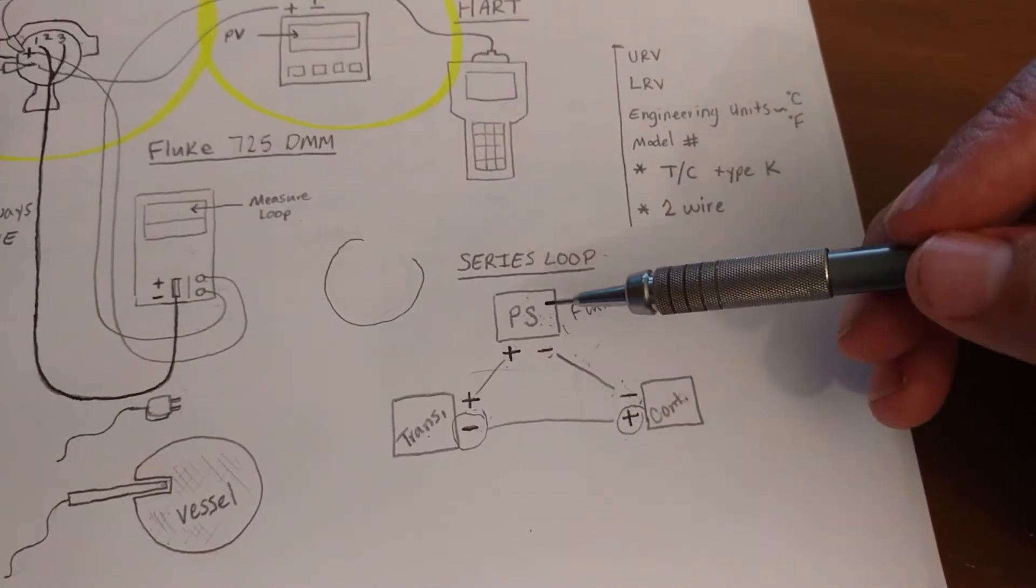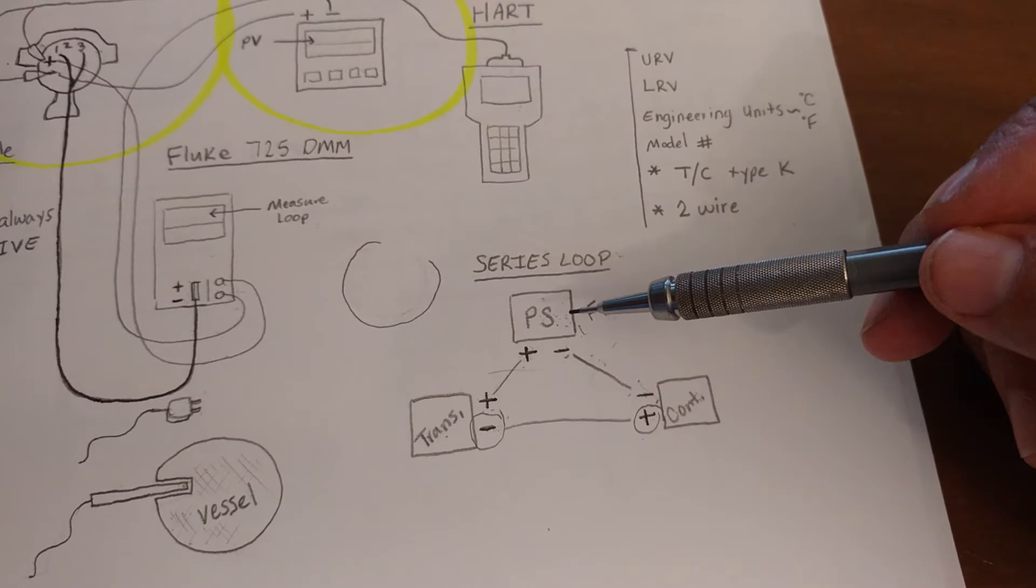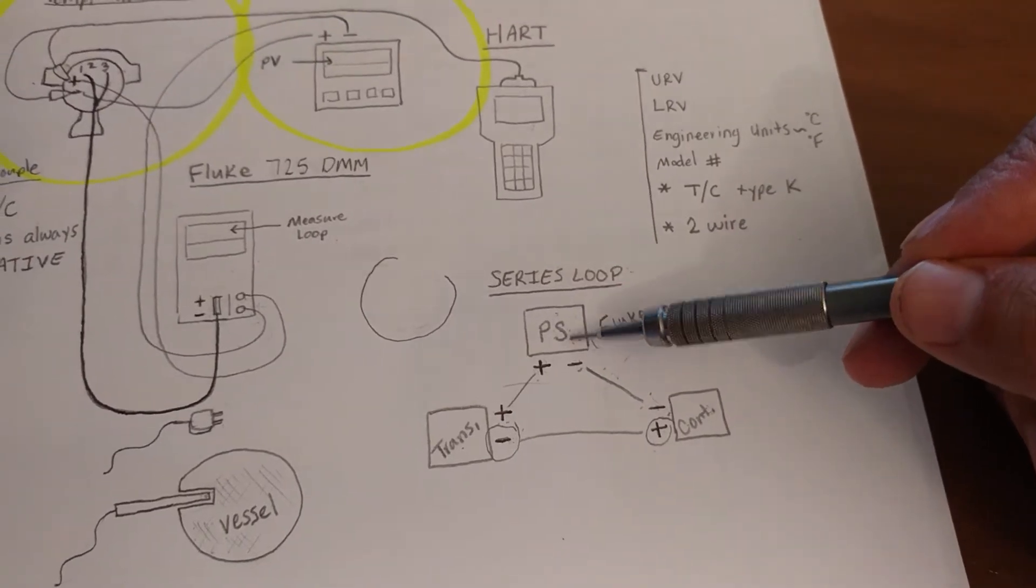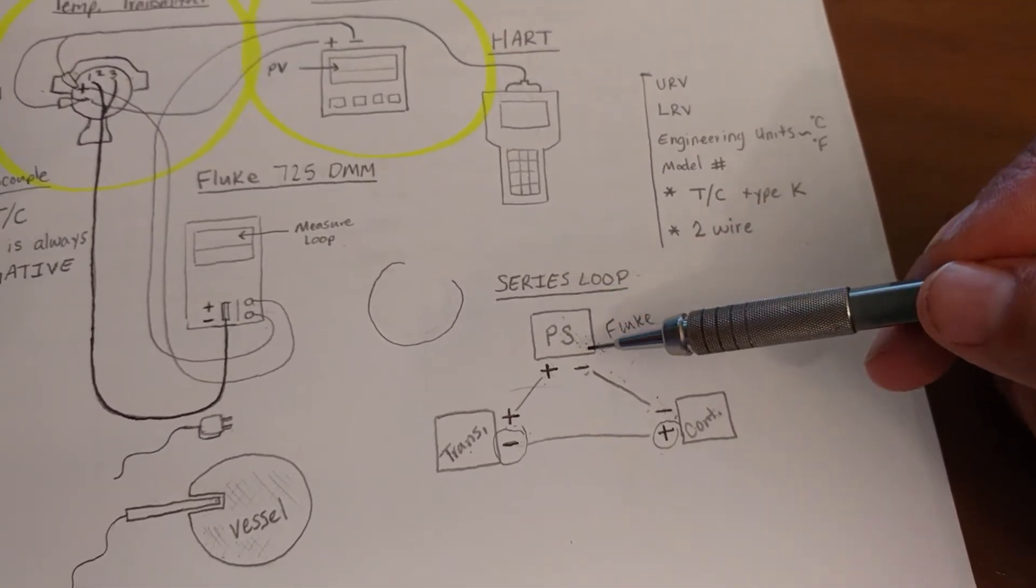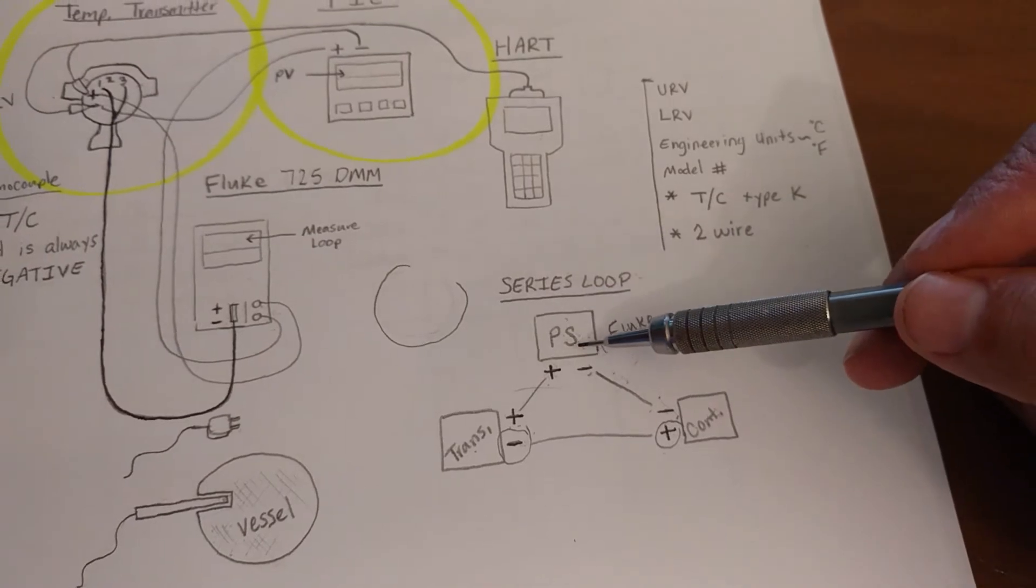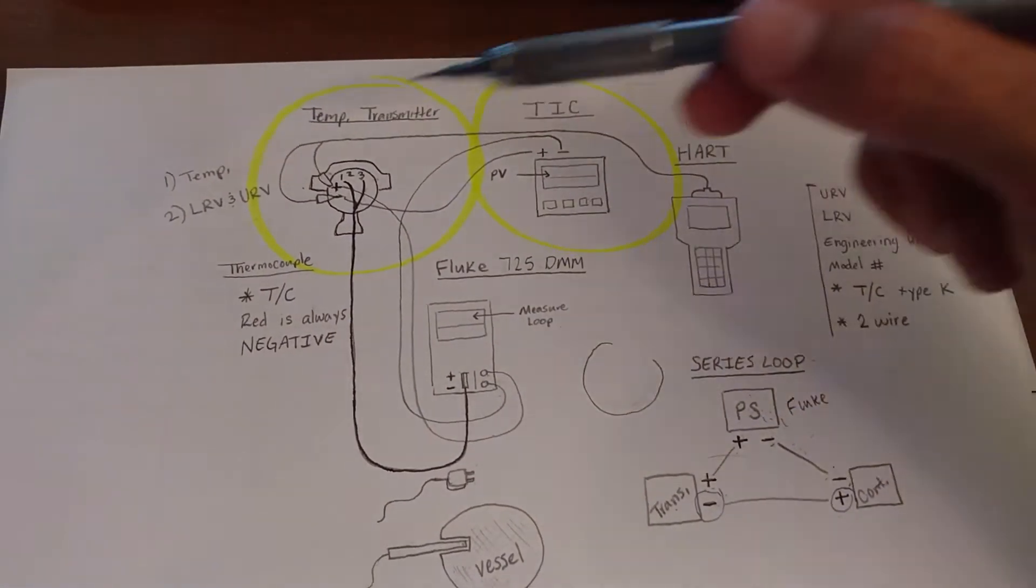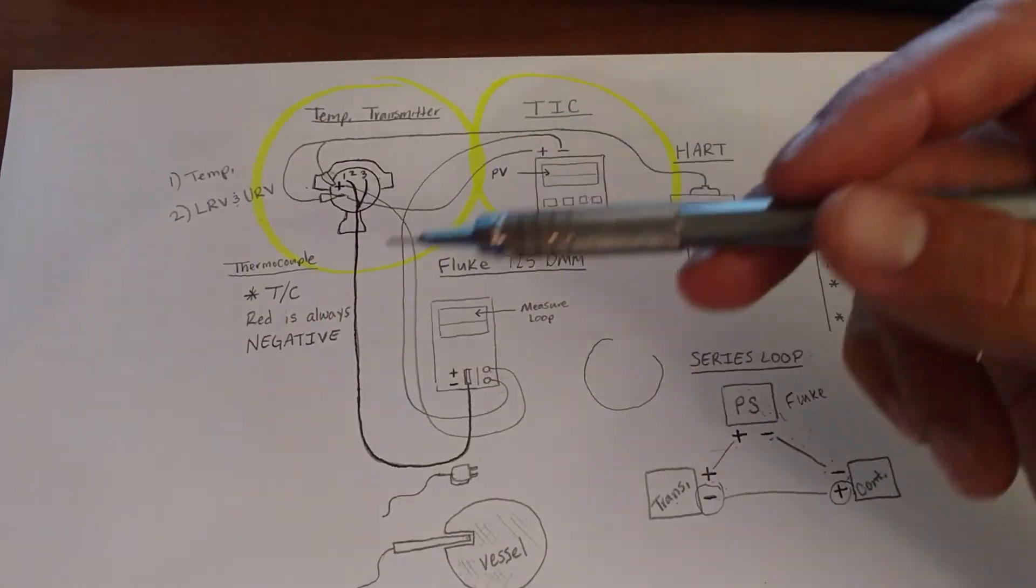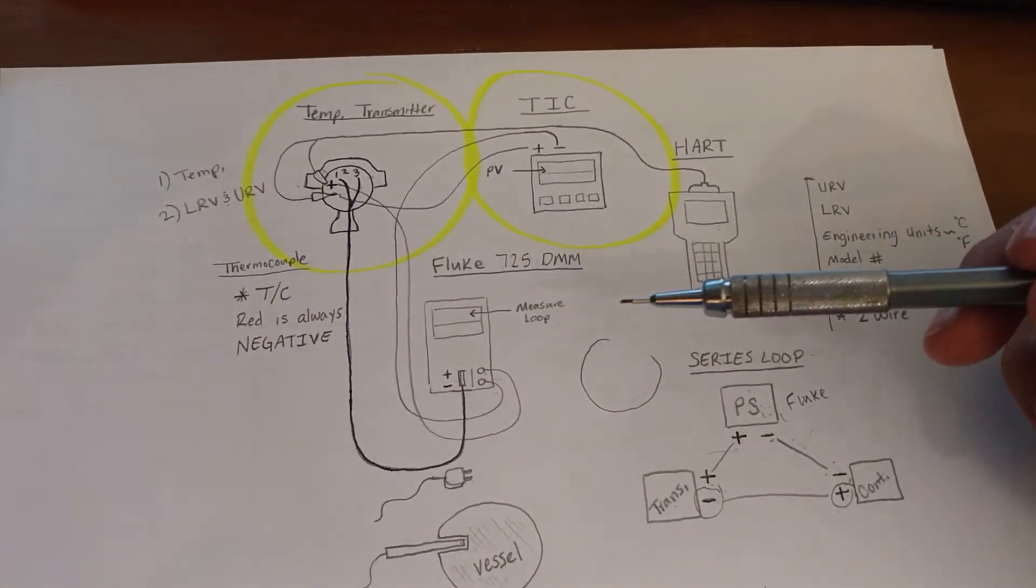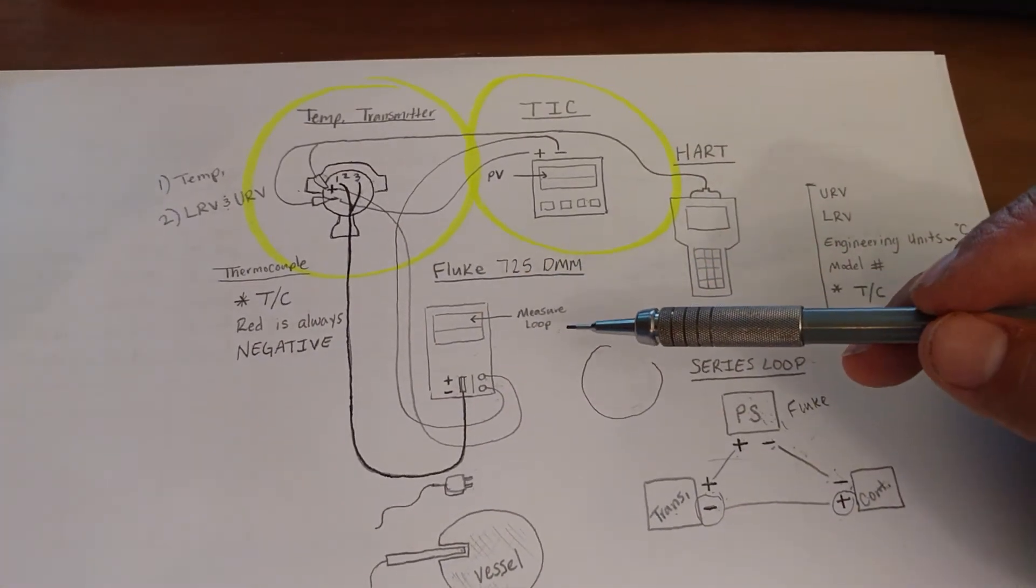So in our series loop, we're always going to have a power source. That's a very good place to start. Every time, right off the bat, you look at your power source. And in this loop, in this process right here, this setup, the power source is the Fluke because of our measure loop function.